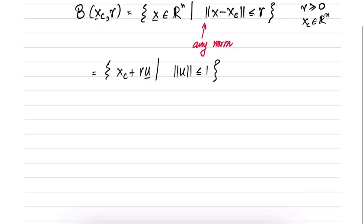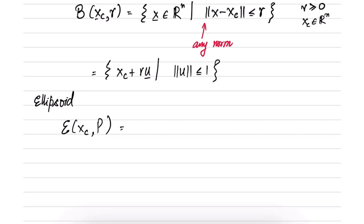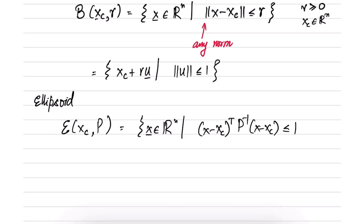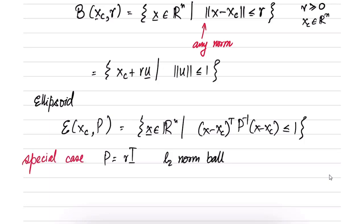A slightly generalized version of the norm ball is the ellipsoid. We define the ellipsoid for Euclidean space only. The ellipsoid is defined as the set of all x in R^n such that (x minus xc)^T P^{-1} (x minus xc) is less than or equal to 1. If you choose P equal to R times the identity, this becomes an L2 norm ball — a special case.